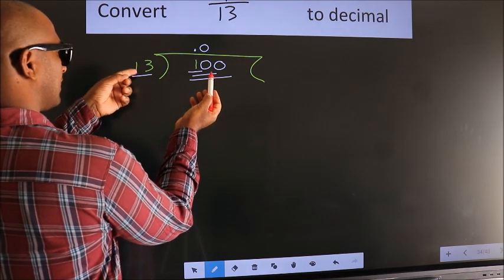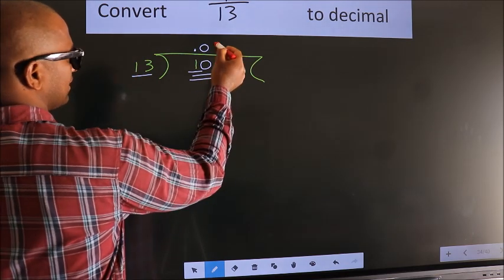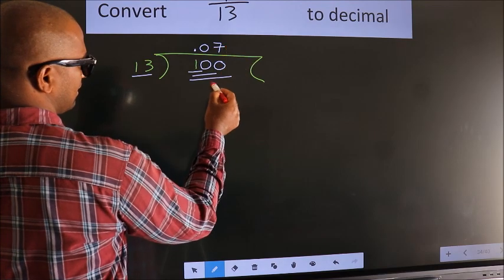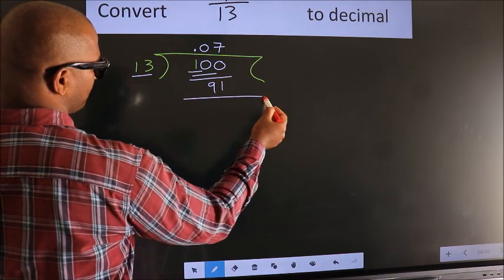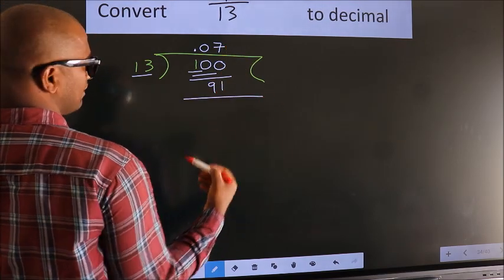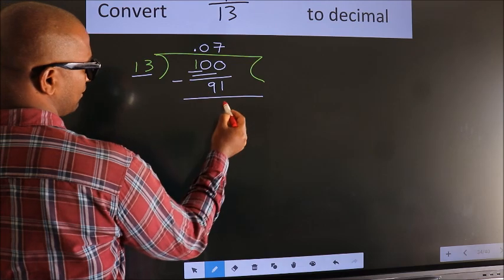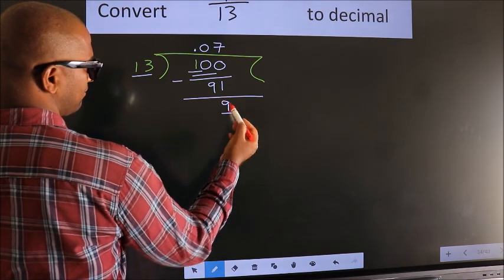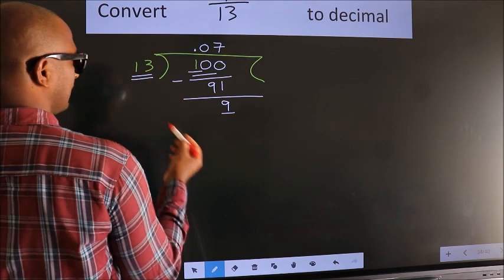A number close to 100 in the 13 times table is 13×7=91. Now we subtract and we get remainder 9.